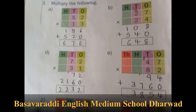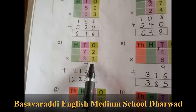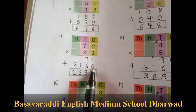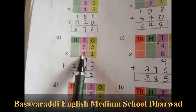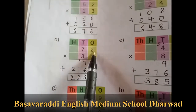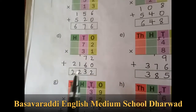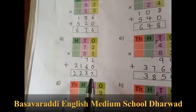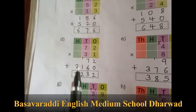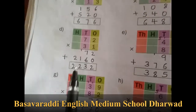We have to add. So 72 into 31: 1 times 2 is 2, 1 times 7 is 7. Putting 0 here. Tens place: 3 times 2 is 6, 3 times 7 is 21, so 2 is carry over. 2 plus 0 is 2, 7 plus 6 is 13, 1 is carry over, 1 plus 1 is 2, and 2 in thousands plus 2. So the answer is 2232.